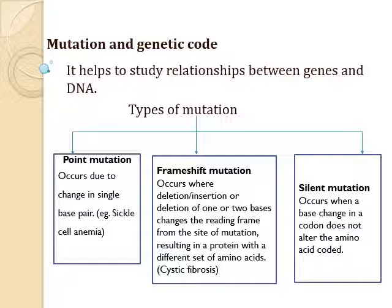First is point mutation. It occurs due to a change in a single base pair. For example, sickle cell anemia is caused by the substitution of glutamic acid by valine at the sixth position of the beta globin chain of the hemoglobin molecule. A point mutation that inserts or deletes a base in a structural gene can be better understood by the following simple example.